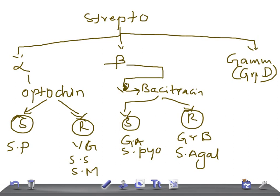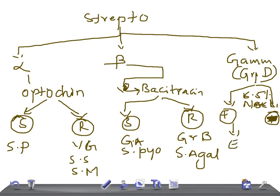Gamma hemolytic streptococci are also called Group D because they show no hemolysis. For these, we check growth in 6.5% NaCl. If growth is positive, it's Enterococcus faecalis. If negative, it's Streptococcus bovis.